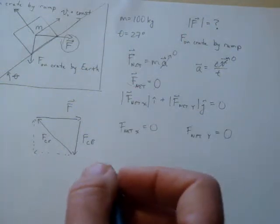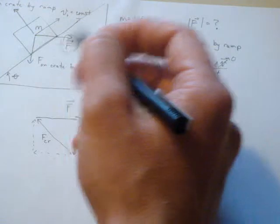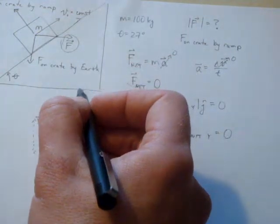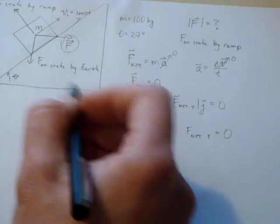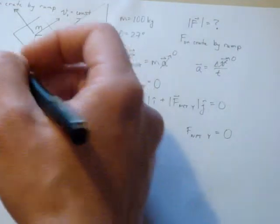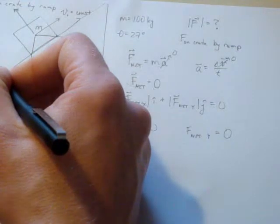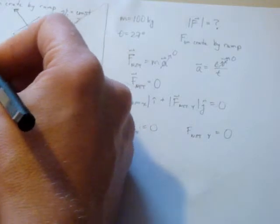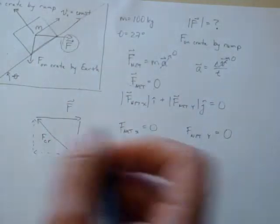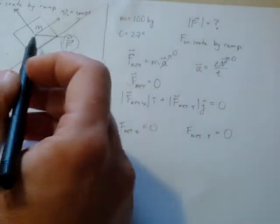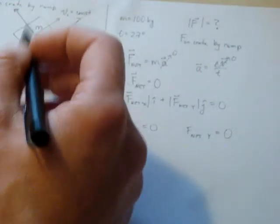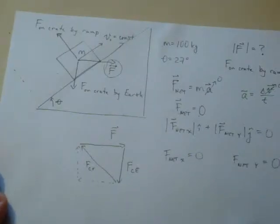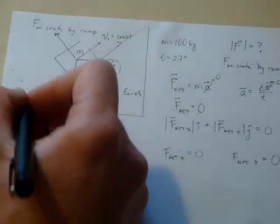For a lot of ramp problems we choose a coordinate axis aligned with the angle of the ramp, so that the x direction is horizontal to the plane and the vertical direction is perpendicular to that. For this particular problem, because we have two vectors that are actually in a horizontal and vertical direction and only one vector that splits between the two, we're going to maintain our standard vertical and horizontal axes.